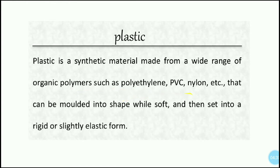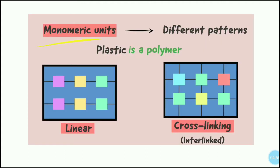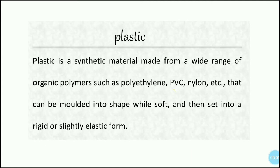These are organic polymers such as polyethylene, PVC, nylon, etc. — materials that can be molded into shape while soft and then set into a rigid or slightly elastic form. Basically, you can heat or melt plastic and then give it any shape. So plastic is a synthetic material made from a wide range of organic polymers such as polyethylene, PVC, and nylon.